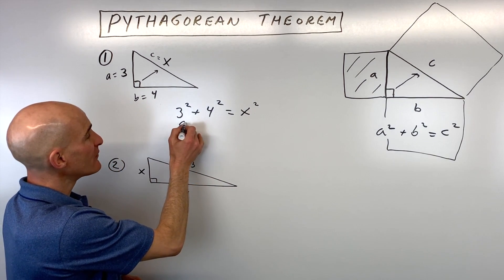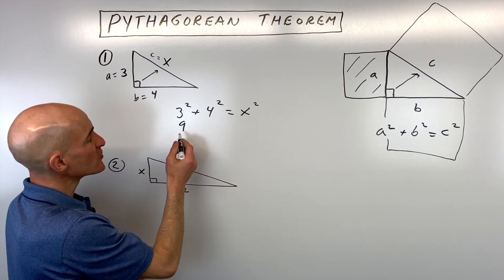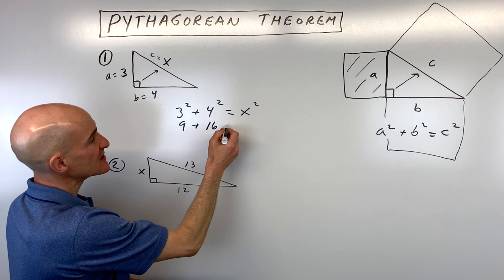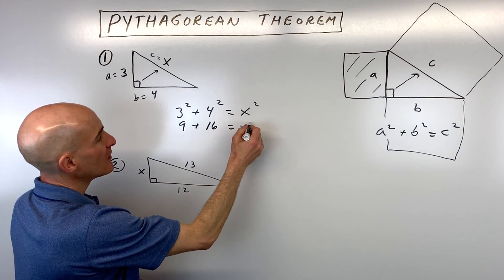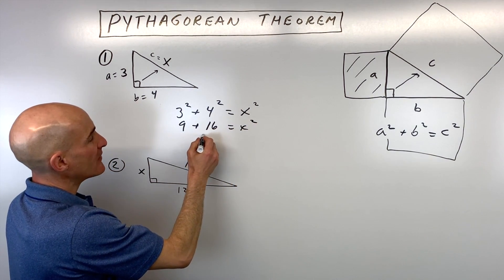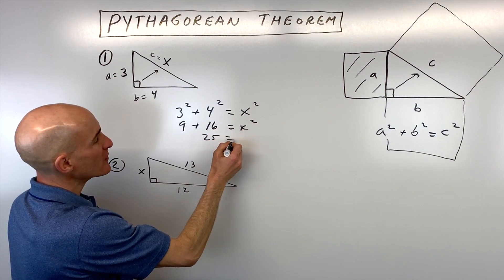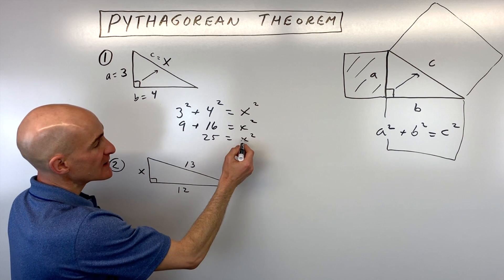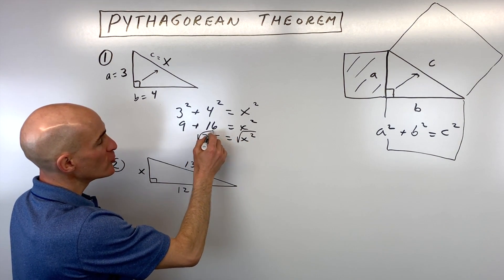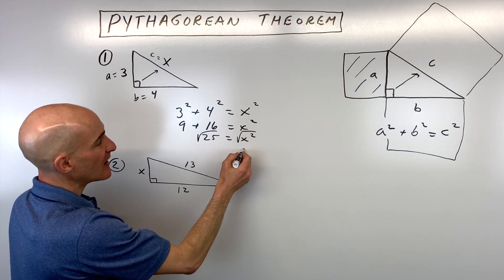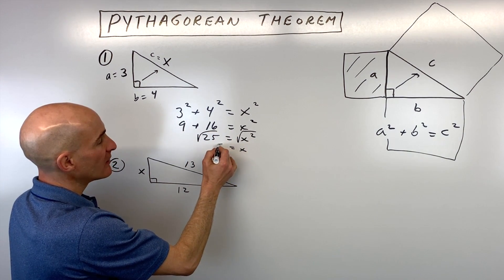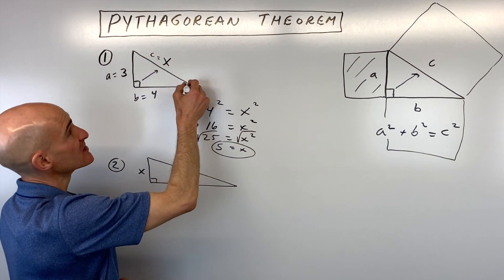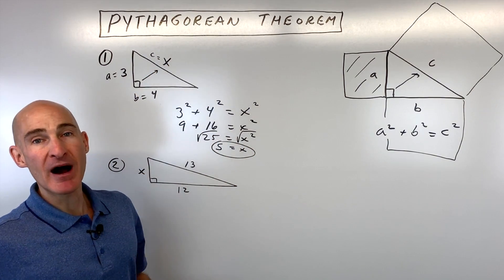Just simplify: 3 squared means 3 times 3, which is 9. 4 squared is 4 times 4, which is 16. And if we add these together, we get 25 equals x squared. To get x by itself, we're going to take the square root of both sides, and we get 5. So now we know the length of this hypotenuse.